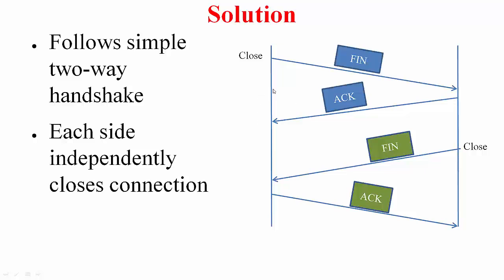This is what happens in the implementation. Both sides follow a simple two-way handshake: when process A issues close, it sends a FIN packet, and once the acknowledgement comes, this side is no longer going to send data. Similarly, the other side can continue sending data for some time, and when that process says close, it sends a FIN which gets acknowledged and that side of the connection is also closed. Through timeouts, you retransmit the FIN or the ACK so that the connection closes, but after a few retries if you still cannot get through, you just close the connection.